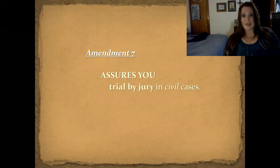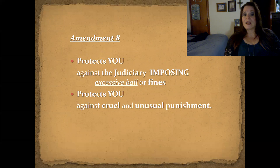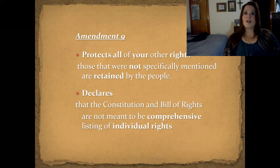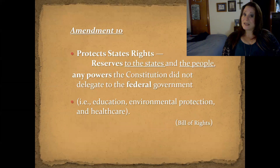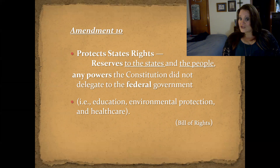Amendment 7 assures you trial by jury in civil cases. Amendment 8 protects you against the judiciary imposing excessive bail or fines, and protects you against cruel and unusual punishment. Amendment 9 protects all of your other rights not specifically listed, and declares that the Constitution and Bill of Rights are not meant to be a comprehensive list of individual rights. Amendment 10 protects states' rights — it reserves to the states and to the people any power the Constitution does not specifically delegate to the federal government, such as education, environmental protection, and health care.